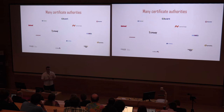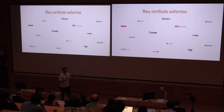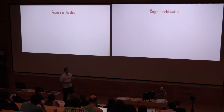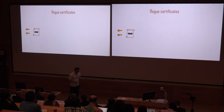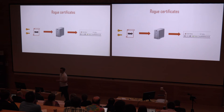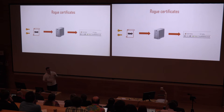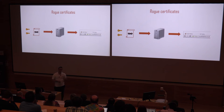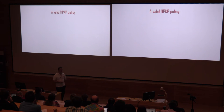StartCom, another certificate authority, was compromised by a security researcher who issued themselves a certificate for paypal.com. With these certificates you can impersonate sites and get all the green markers in the browser — there is no difference. The attacker generates a key pair, a certificate signing request, sends it to the authority, gets their certificate, does some configuration on their server, and gets green HTTPS — except they are now impersonating you. HPKP is what allows us to solve this problem, to stop other people using rogue or mis-issued certificates to impersonate us and our sites.